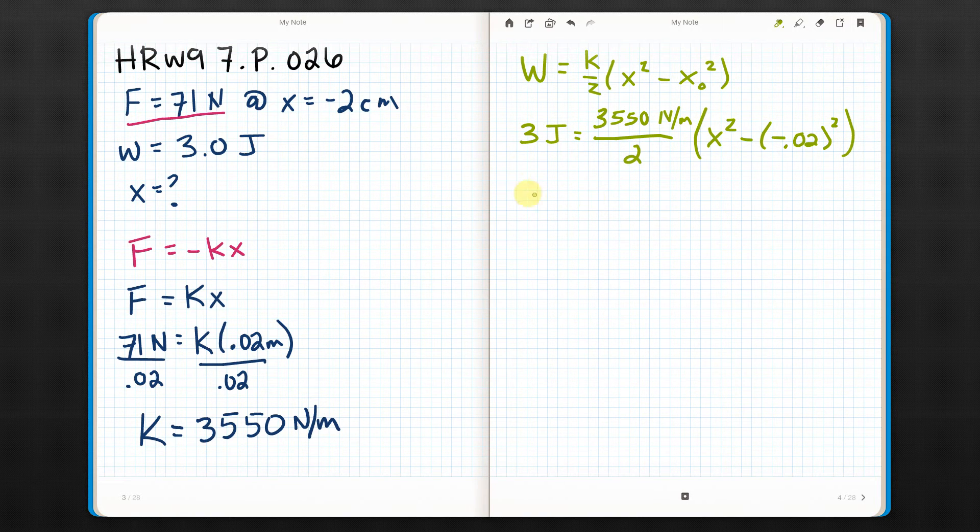I'm going to go ahead and get this to the other side. So basically I'm just multiplying both sides by 2 over 3,550. So what I get over here is I get, well, I've got that 3 joules, and then I'm going to multiply by the reciprocal. So I get 2 over 3,550 newtons per meter. That equals x squared minus, notice the value of x0 was negative, but it's getting squared. So that negative is going away. And I got 0.02 squared, so that's 0.0004 meters.